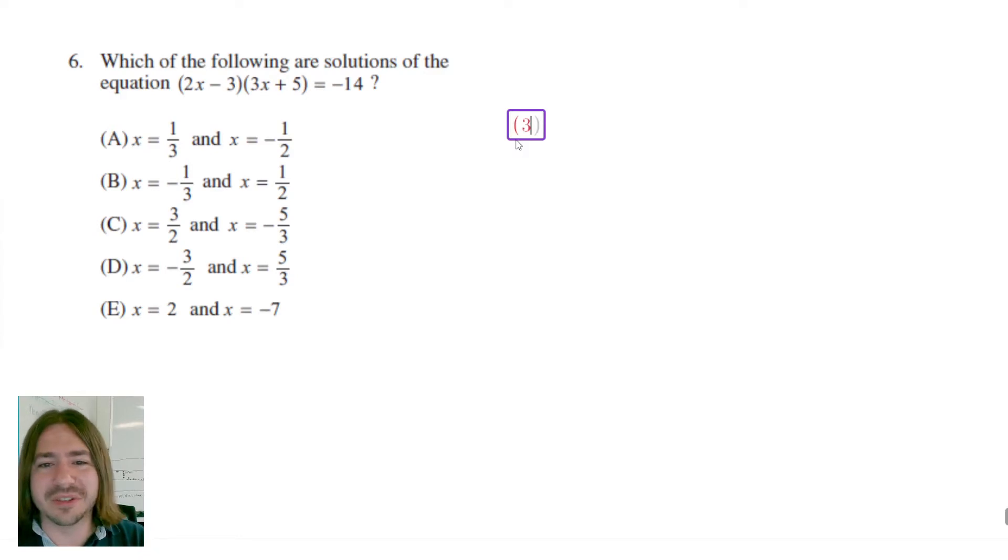Kind of annoying, but that's just the way you've got to do it. So I'm going to rewrite this equation: 2x minus 3 times 3x plus 5 equals negative 14. So essentially what we have to do first is we've got to multiply the first binomial by the second one, and then we're going to move this negative 14 over to make it equal zero as well.